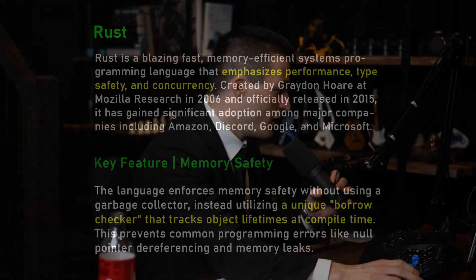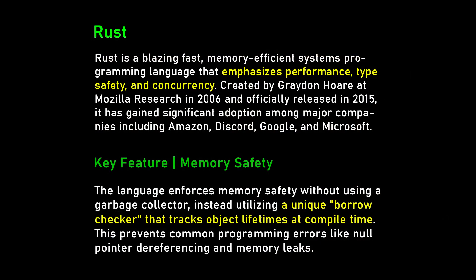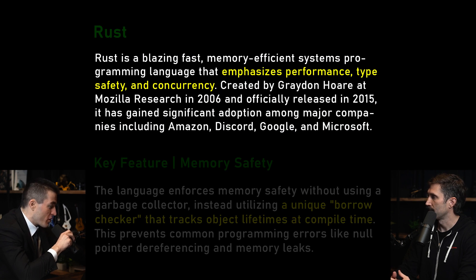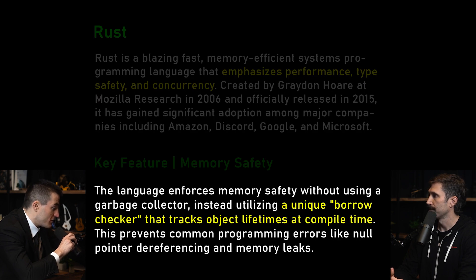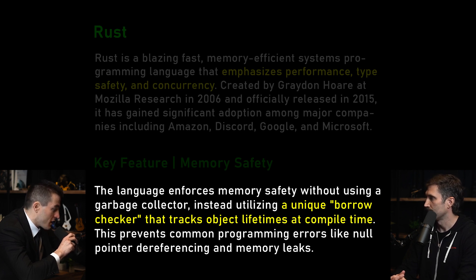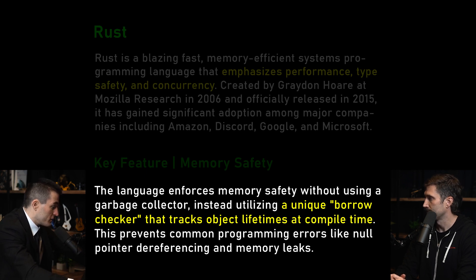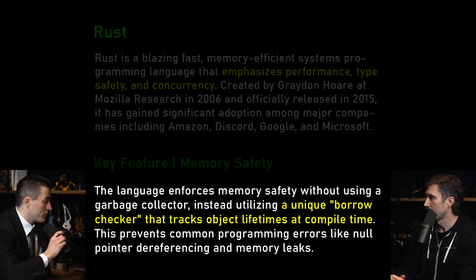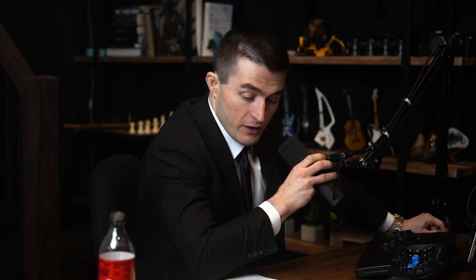The safety might create some limitations — let's consult the AI overlords. Rust is a blazing fast, memory-efficient systems programming language that emphasizes performance, type safety, and concurrency. The language enforces memory safety without using a garbage collector, instead utilizing the unique 'borrow checker' that tracks object lifetimes at compile time. This prevents common programming errors like null pointer dereferencing and memory leaks.